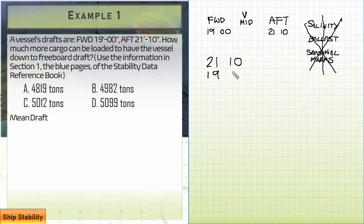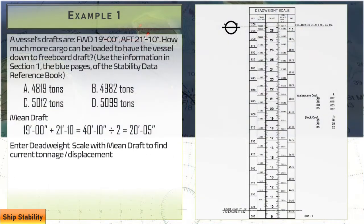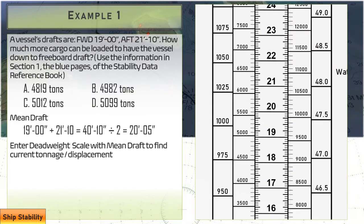21'-10" plus 19'-00" and we add them to get 40'-10". Divide by two. And we're looking at 20'-05". That's our midship draft. We're going to enter our deadweight scale with 20 feet, 5 inches, our midship draft. There's our water line.